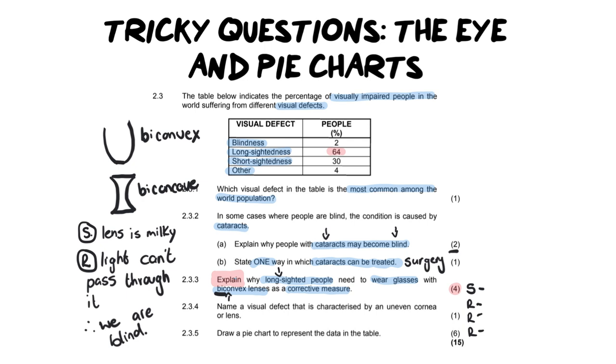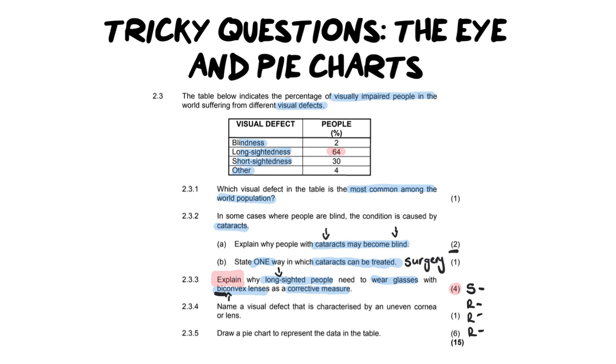So let's construct this answer. Our statement needs to answer something about what long-sighted people are. People who are long-sighted, their lens is less convex. If their lens is less convex we have to try and make it more convex, that's why you're using a bi-convex lens. Now we need our reasoning. If the lens is less convex then the image falls, this is important now, behind the retina.